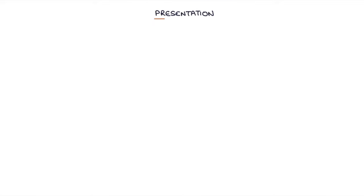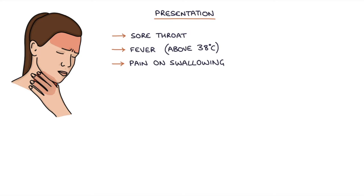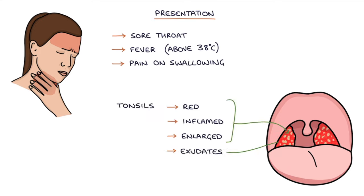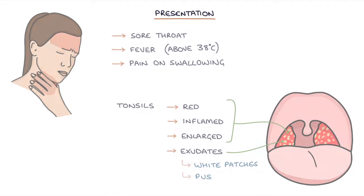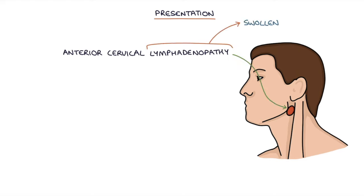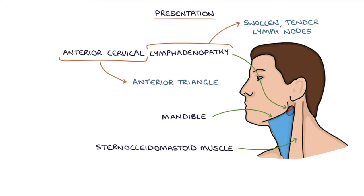Let's talk about the presentation of tonsillitis. The typical presentation of acute tonsillitis is with a sore throat, a fever above 38 degrees Celsius, and pain on swallowing. Examination of the throat will reveal red, inflamed and enlarged tonsils with or without exudates — exudates are small white patches of pus on the tonsils. There may also be anterior cervical lymphadenopathy, which refers to swollen tender lymph nodes in the anterior triangle of the neck, anterior to the sternocleidomastoid muscle and below the mandible or the jawline.